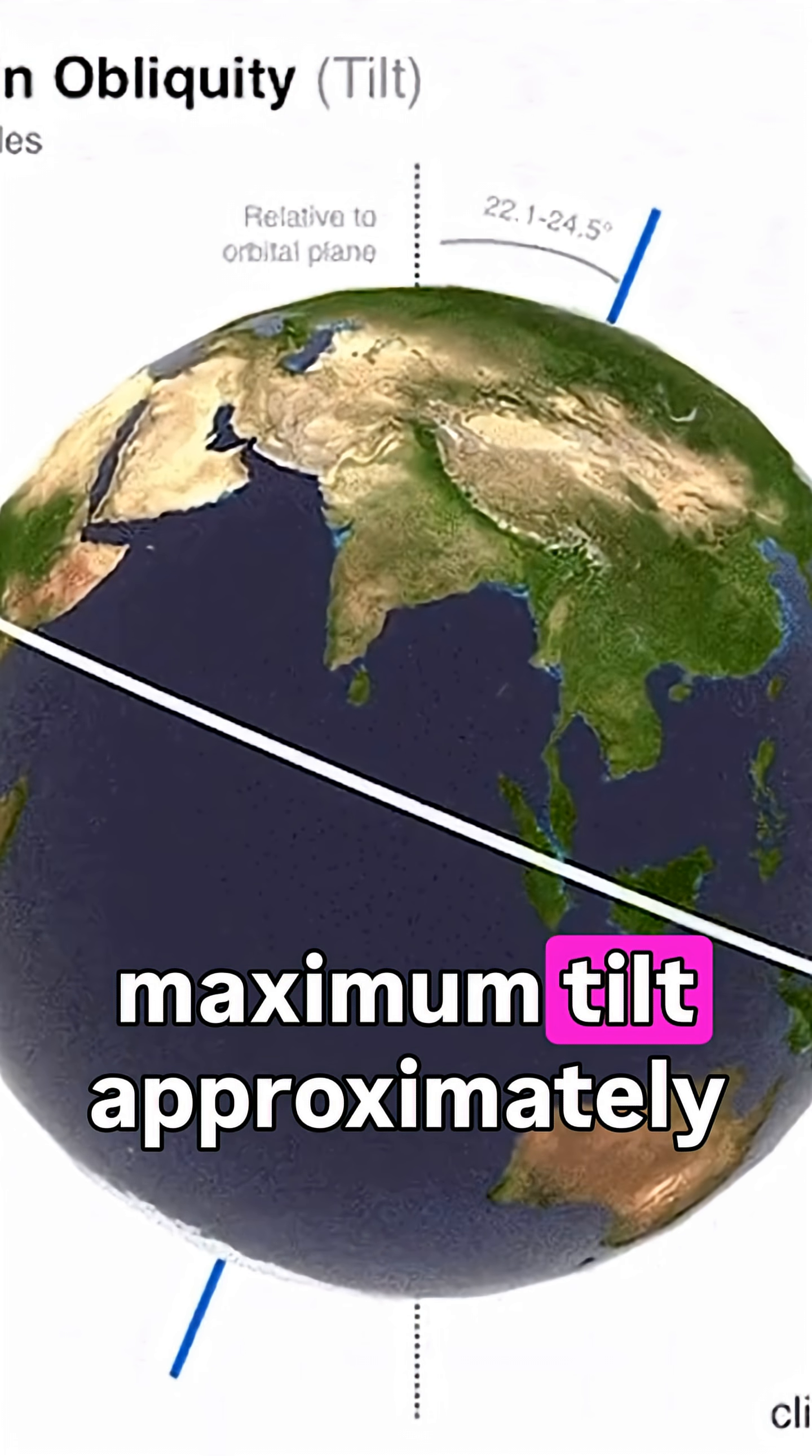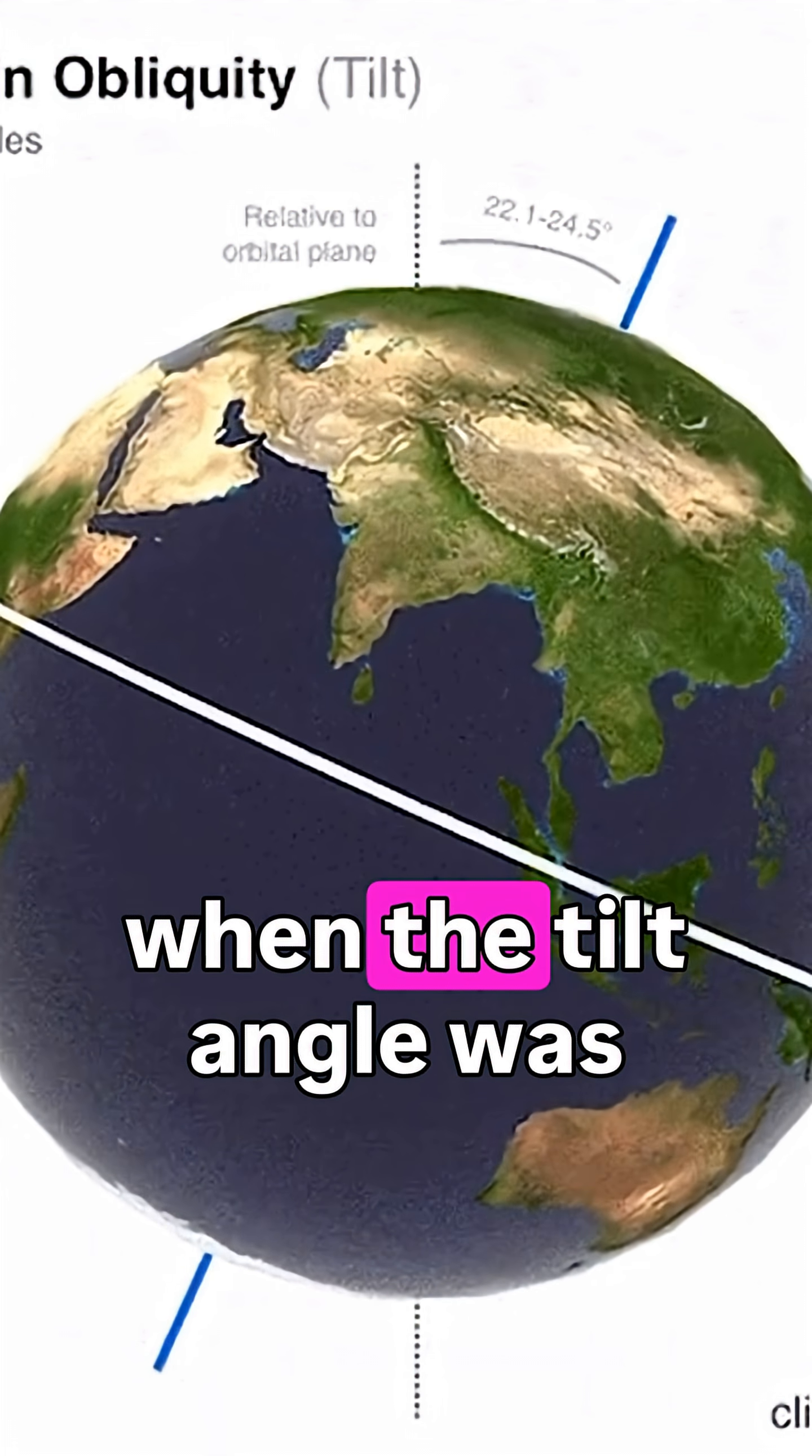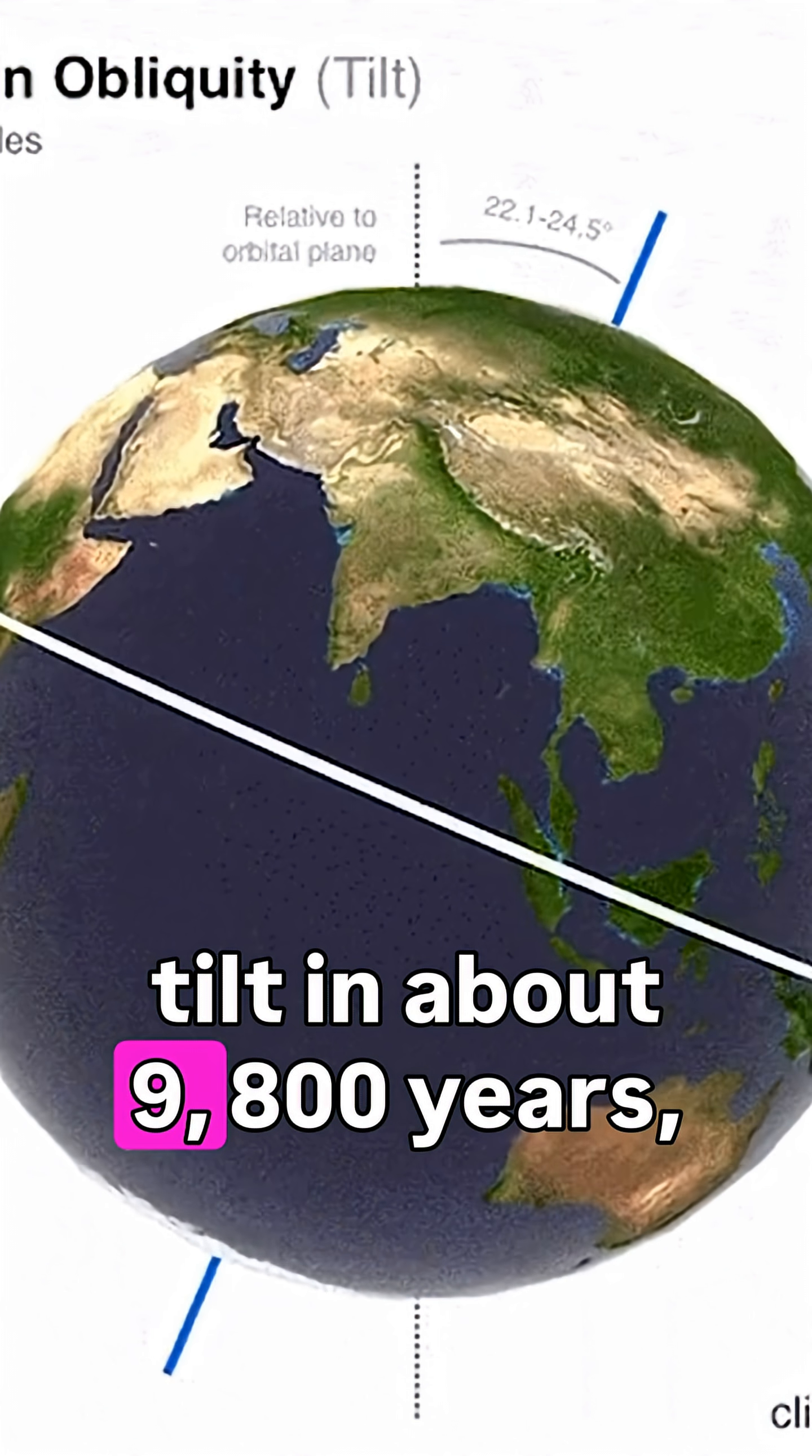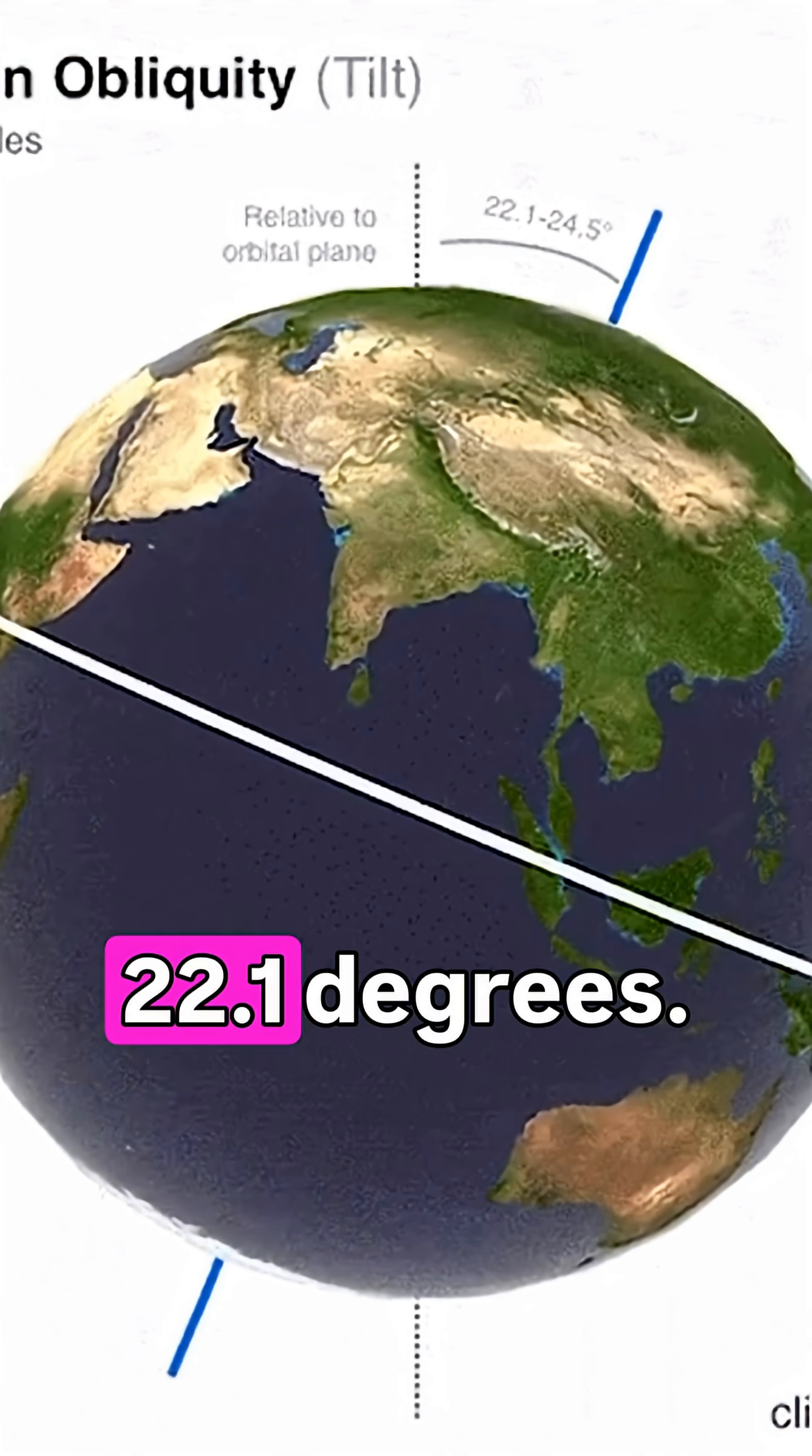Earth's axis reached its maximum tilt approximately 10,700 years ago, when the tilt angle was about 24.5 degrees. It will reach its minimum tilt in about 9,800 years, when the tilt angle will be 22.1 degrees.